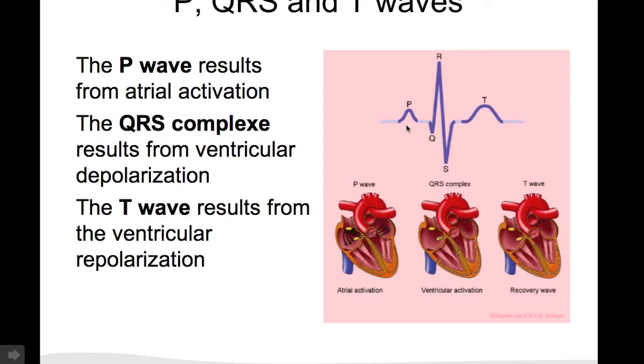If you go from left to right through the ECG of one heartbeat, you first encounter the P wave, which is the result of the atrial activation, as we've seen.